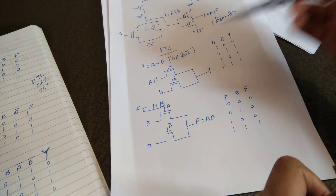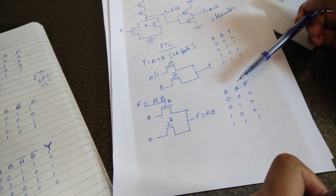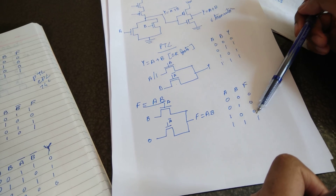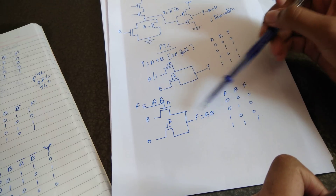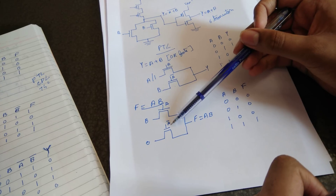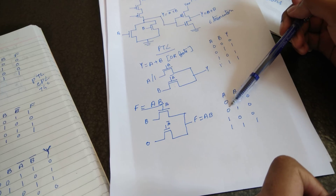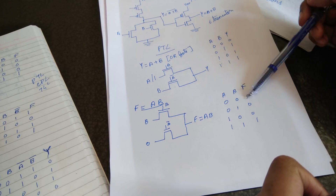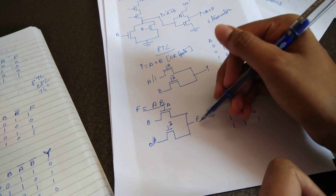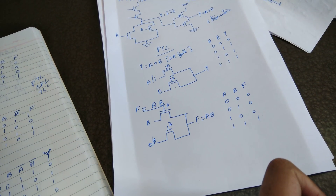Now let's look at another problem using PTL: the logic equation F equal to AB. First rewrite the logic. We can see that when A is 1, what is given as B is obtained as output. When A complement is given — A complement is 0 — at that time output is obtained as 0 or A itself. So by giving 0 or A we obtain the output. F equal to AB can be implemented using 2 transistors.